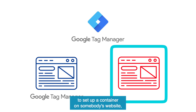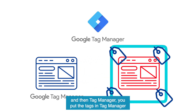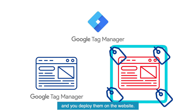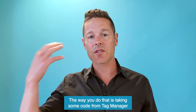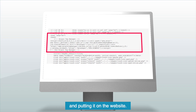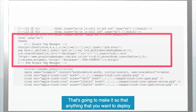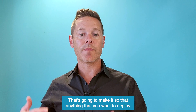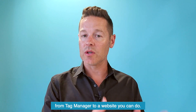You use Tag Manager to set up a container on somebody's website, and then you put the tags in Tag Manager and deploy them on the website. The way you do that is by taking some code from Tag Manager and putting it on the website. That's going to make it so that anything that you want to deploy from Tag Manager to a website, you can do.